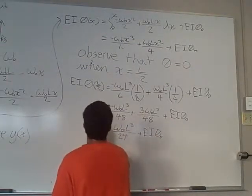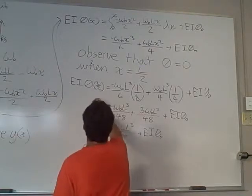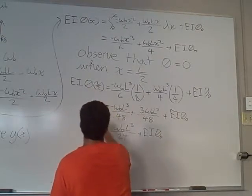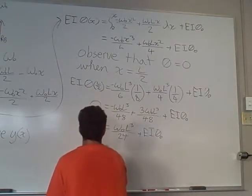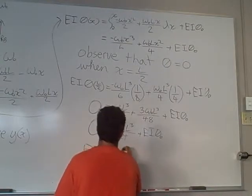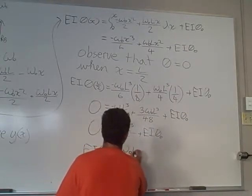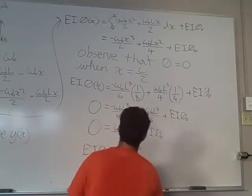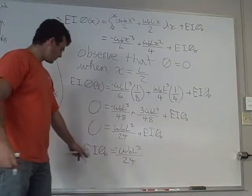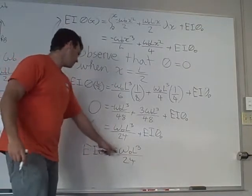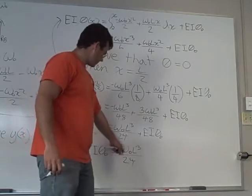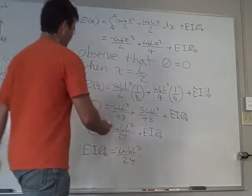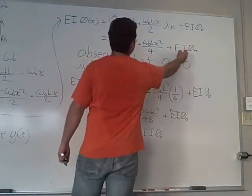So we're going to see that, because theta at this point equals zero. So basically our constant of integration equals negative WL to the third over 24. And so we can take this and plug it back up into here.